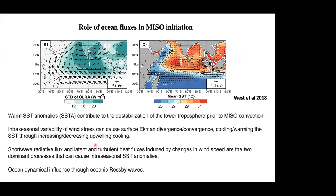The role of oceans is clear from the mean SST pattern — strong SST anomalies exceeding 28°C drive MISO northward. Strong positive SST anomalies help destabilize the troposphere prior to MISO convection. Intraseasonal variability feedbacks can lead to changes in SST anomalies, and changes in surface fluxes can also produce changes in intraseasonal SST anomalies. Apart from that, ocean dynamical processes — which are less explored over the Indian Ocean domain — can give rise to strong SST anomalies over the region.